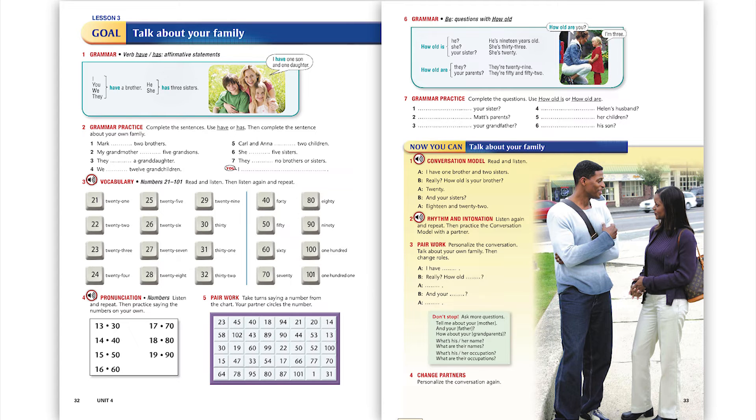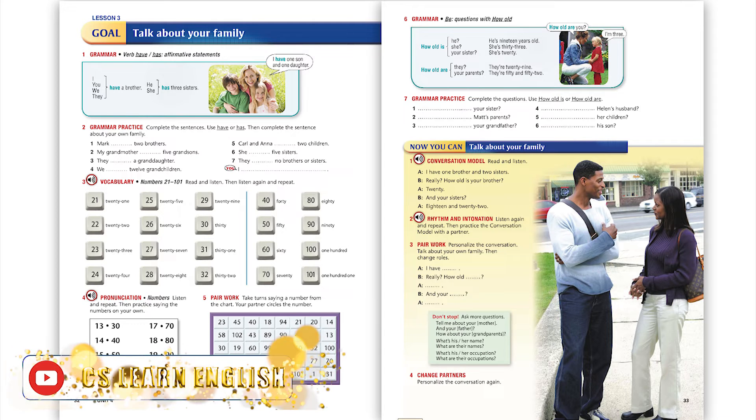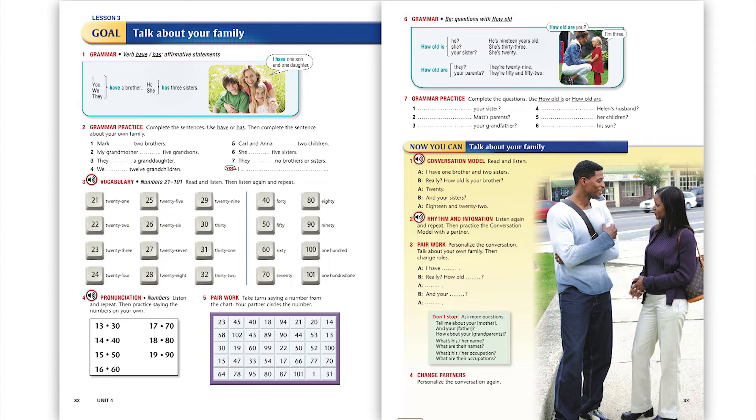Page 32, Exercise 3: Vocabulary, numbers 21 to 101. Read and listen. Twenty-one, twenty-two, twenty-three, twenty-four, twenty-five, twenty-six, twenty-seven, twenty-eight, twenty-nine, thirty, thirty-one, thirty-two, forty, fifty, sixty, seventy, eighty, ninety, one hundred, one hundred and one. Now listen again and repeat.